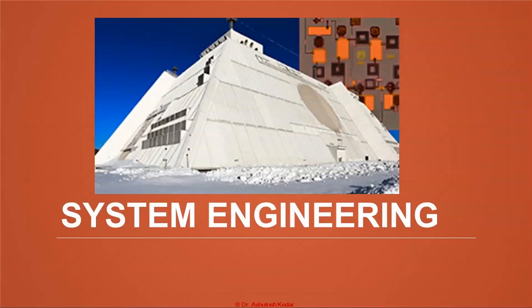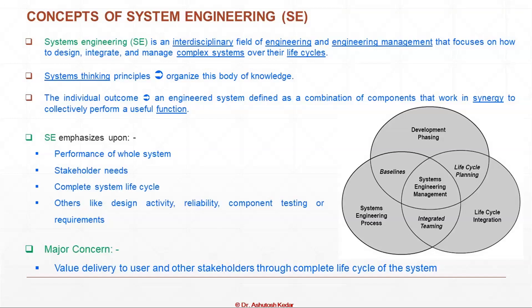System engineering is an interdisciplinary field of engineering and engineering management. It focuses on how to design, integrate and manage complex systems over their life cycle. It gives a thinking principle to organize the body of knowledge available from past experiences and team experts. The outcome is an engineered system defined as a combination of components that work in synergy to collectively perform a useful function. System engineering consists of three parts: development phasing, system engineering process, and life cycle integration.